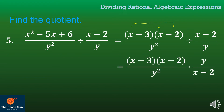After factoring, I copy my dividend and get the reciprocal of the divisor. Note that x minus 2 and x minus 2 is the greatest common factor between numerator and denominator, so I'll factor it out. Between y squared and y, the greatest common factor is y: y squared divided by y is y, and y divided by y is 1. Multiplying the remaining factors: (x minus 3) times 1 all over y, giving us x minus 3 all over y.